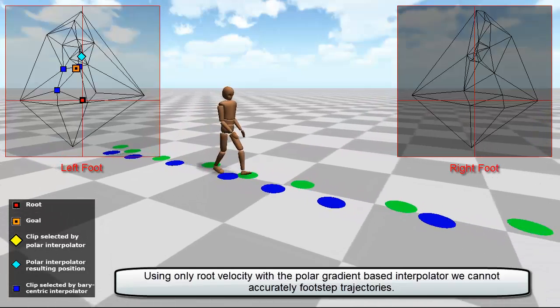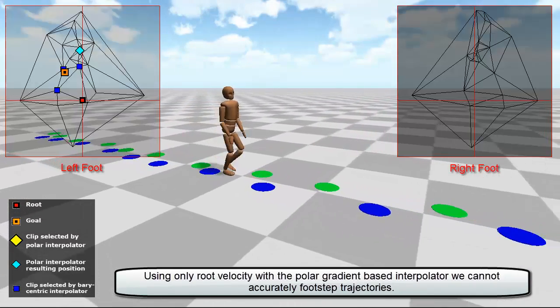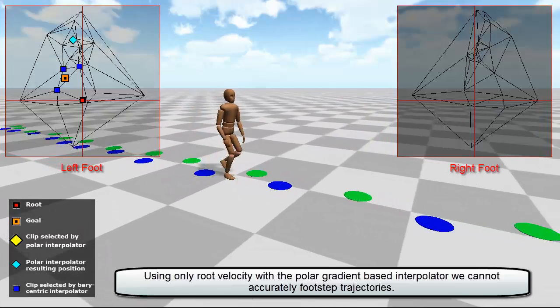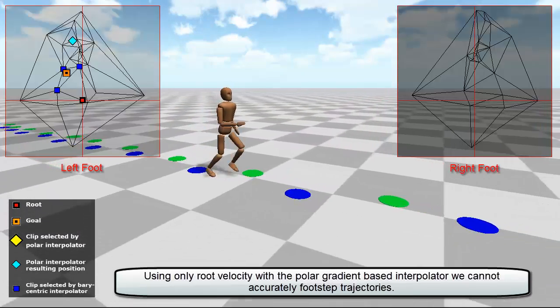Using only the polar band interpolator, we can follow root velocity trajectories, but the character is unable to step correctly in the desired positions.